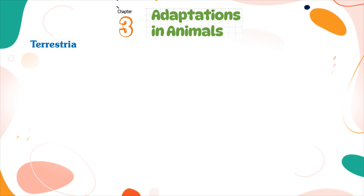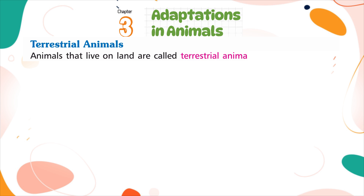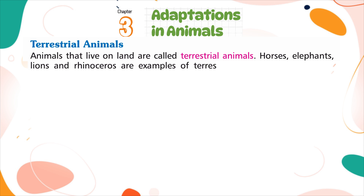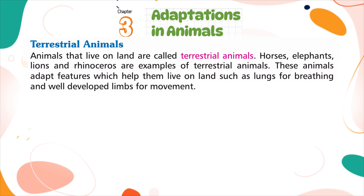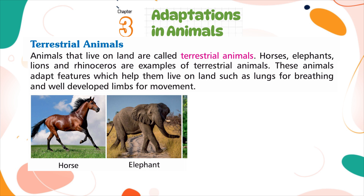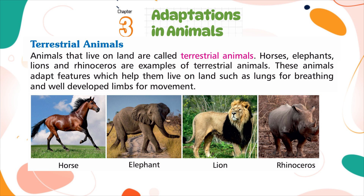Terrestrial Animals. Animals that live on land are called terrestrial animals. Horses, elephants, lions, and rhinoceros are examples of terrestrial animals. These animals adapt features which help them to live on land, such as lungs for breathing and well-developed limbs for movement.